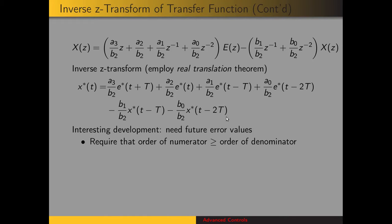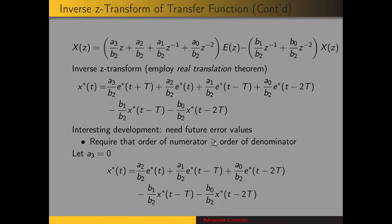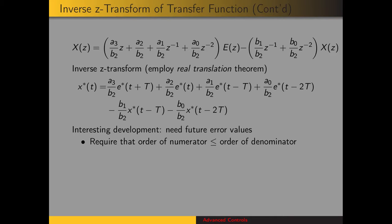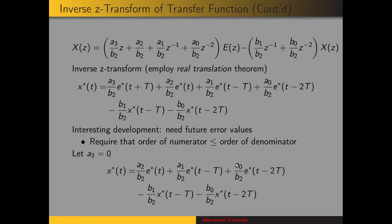What we see here is that to implement this compensator we would need future values for the error, which is impossible. We can conclude that for our compensators we require that the order of the numerator is less than or equal to the order of the denominator. Correcting that typo: the order of the numerator must be less than or equal to the order of the denominator. So for this example, we let a3 equal zero and end up with the expression for the sampled-time output of the compensator.